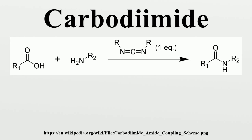Amide Formation: The formation of an amide using a carbidiamide is straightforward, but with several side reactions complicating the subject. The acid 1 will react with the carbidiamide to produce the key intermediate, the O-acylisourea 2, which can be viewed as a carboxylic ester with an activated leaving group. The O-acylisourea 2 will react with amines to give the desired amide 3 and urea 4. The side reactions of the O-acylisourea 2 produce both desired and undesired products.